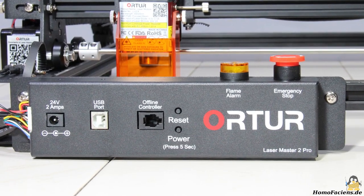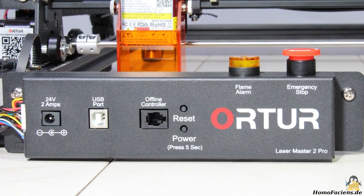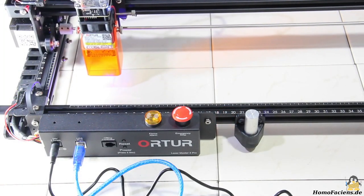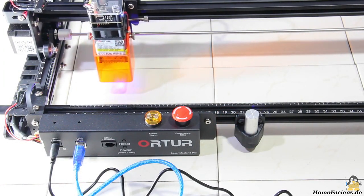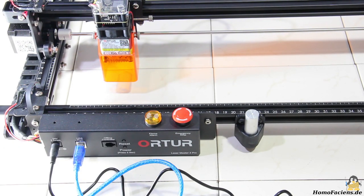Two push buttons on the front can be used to turn the laser engraver on or to reset the firmware. There is an emergency stop switch on the top of the metal box, a very useful safety feature.